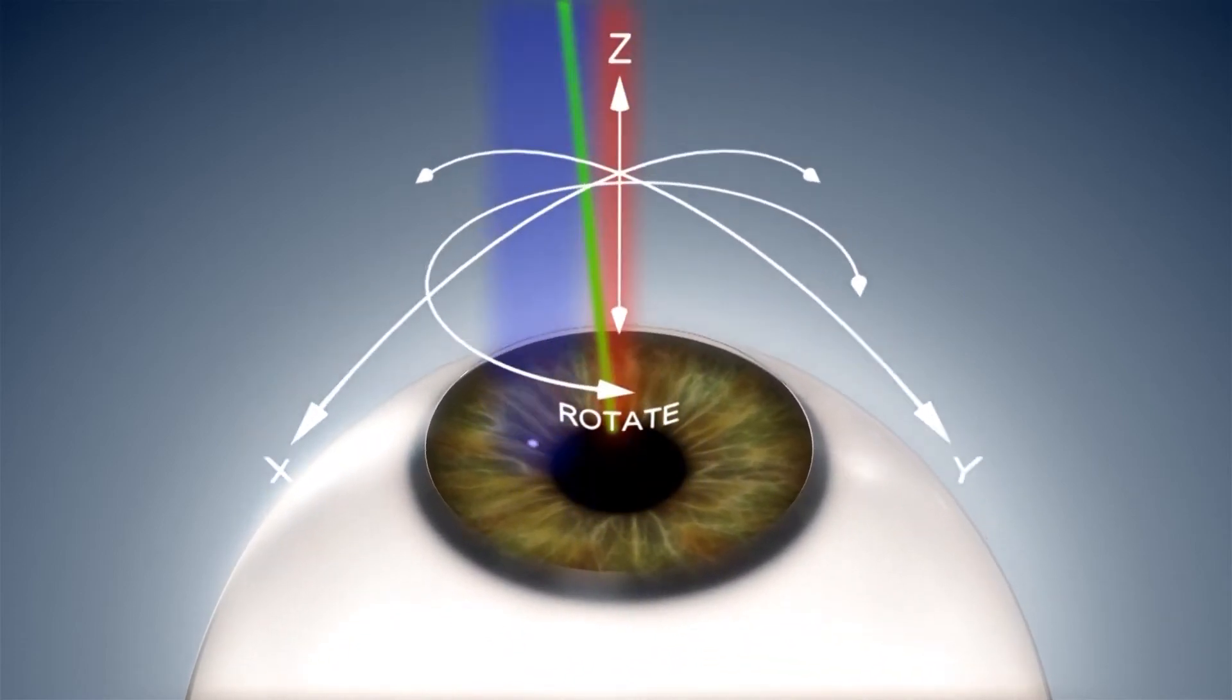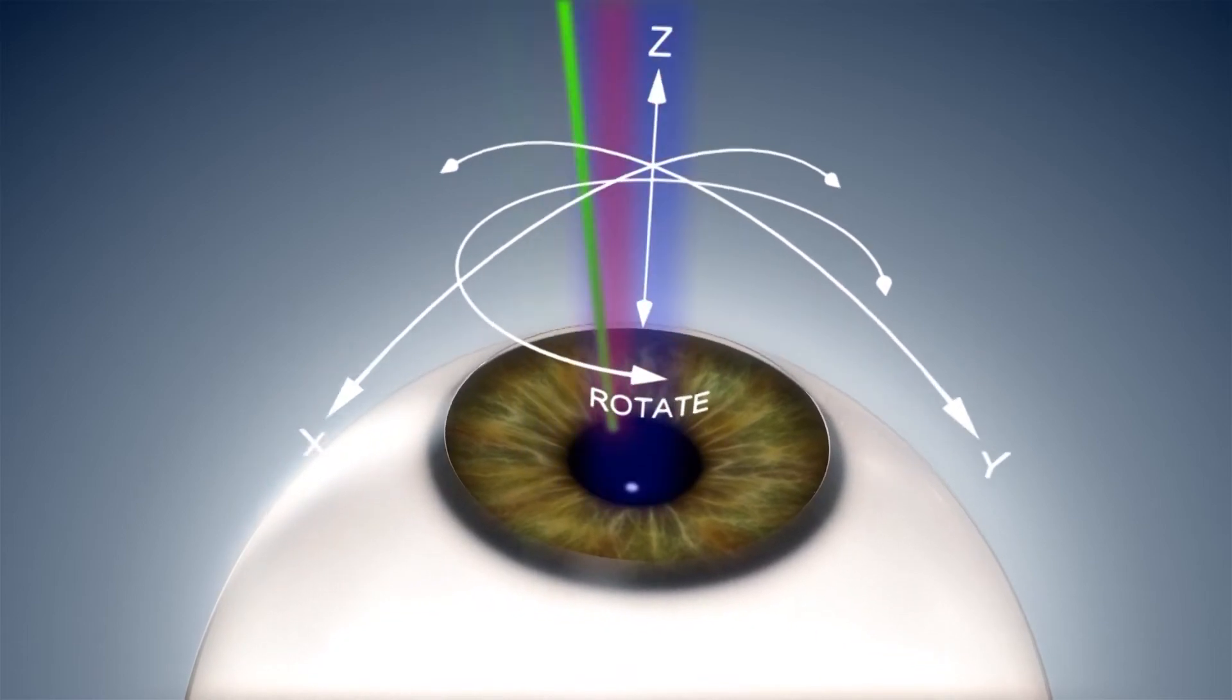The highly sophisticated multi-dimensional tracking, with X, Y, Z and rotation, is a key to ensuring low retreatment rates.